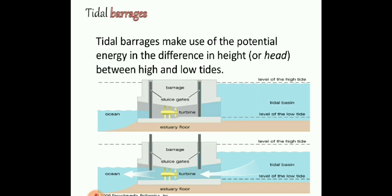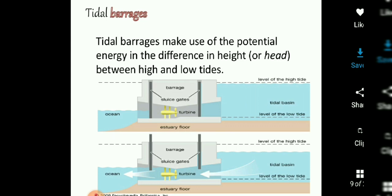The tidal barrage is constructed in the area where there is a water level difference. This height difference results from the sun and moon effect, which causes the water level to increase or decrease — creating high tide and low tide.